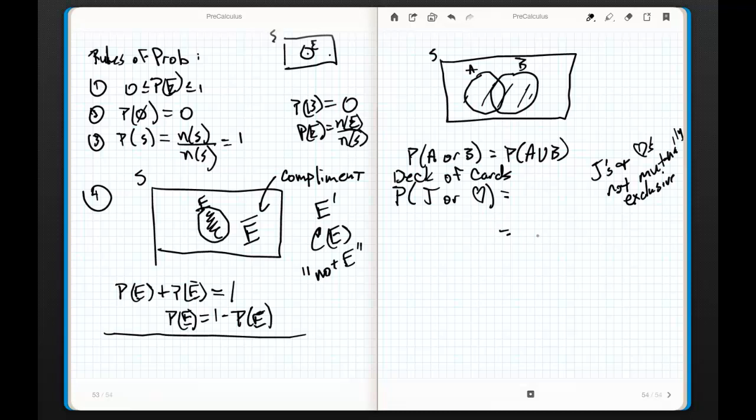What's the probability of drawing a jack? Well, there are four jacks in a deck of cards and there are 52 total cards. So, that's the probability of drawing a jack. What's the probability of drawing a heart? Well, how many hearts are there? There are 13 hearts in a deck out of 52.